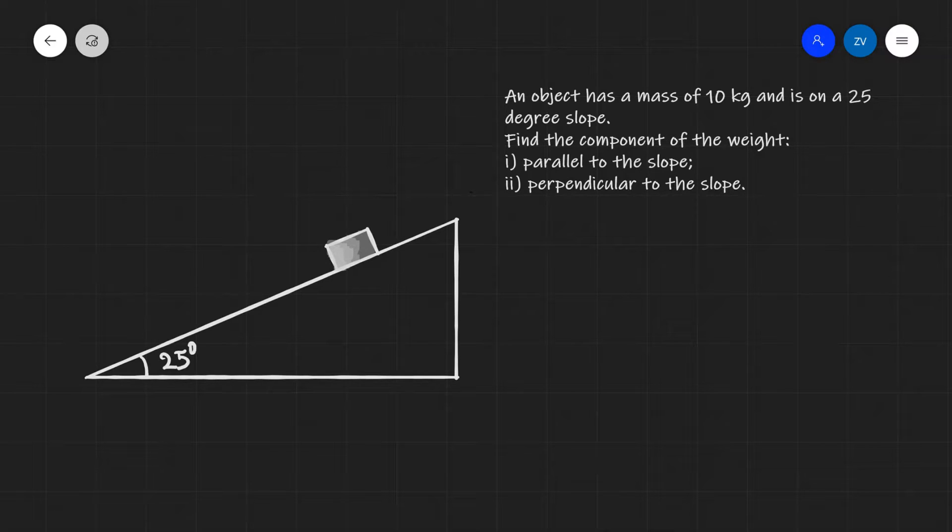So let's have a look at the solution to this particular problem. The first thing that we'll need to do is just calculate the weight. We're given the mass so we can calculate that straight away. It's going to be 10 kilograms multiplied by the gravitational acceleration on earth which is 9.81 meters per second per second and this will be 98.1 newtons.